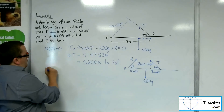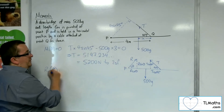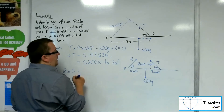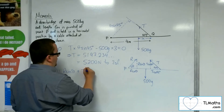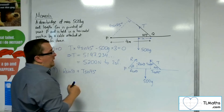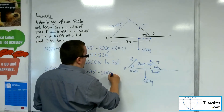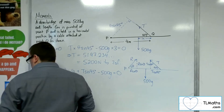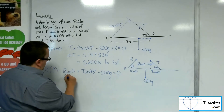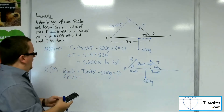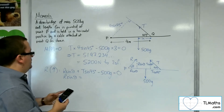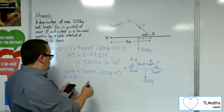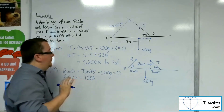Resolving vertically, taking upwards as positive: R sine theta plus T sine 45, minus 500G, equals zero — since acceleration is zero. T sine 45 gives 3,675. So 500 times 9.8 take away 3,675 gives me 1,225. So that's R sine theta.